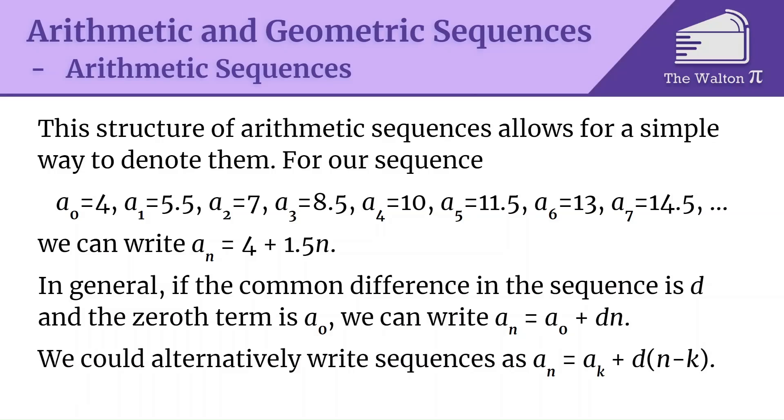We could alternatively write these sequences as a_n is a_k plus d(n-k), and this means that we can write this no matter what the k value we start with. So I could write this with k equals 7, and I could say a_n is a7, so a_n is 14.5, plus d 1.5 times (n-7). That would also give us the same arithmetic sequence.